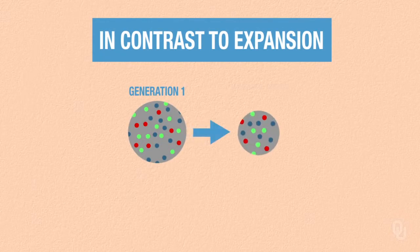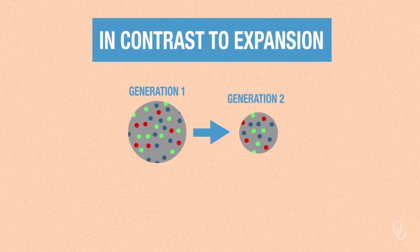This expanding population will, genetically, still look like a small population, until mutation has had the time to build up the population diversity. In contrast to expansion, the next generation could be smaller than the parent population.